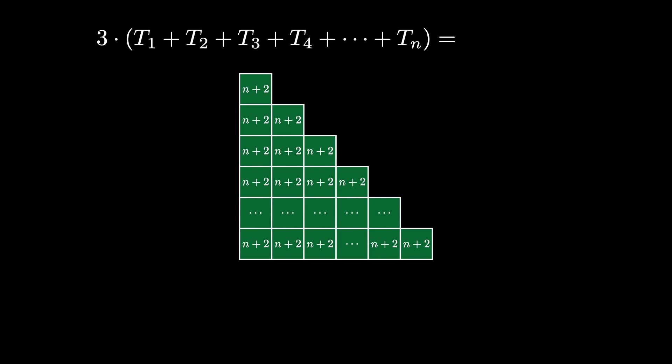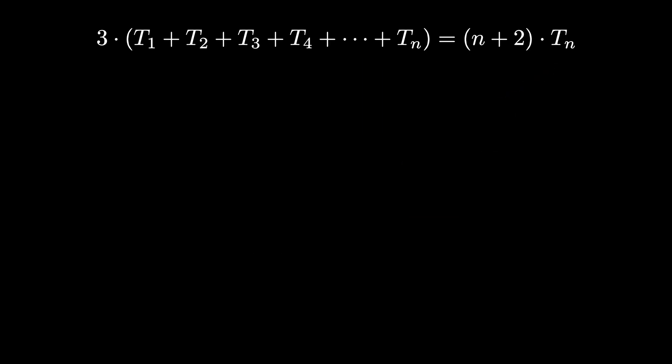And therefore, 3 times the sum of the first n triangular numbers must be equal to n plus 2 times the number of squares in the triangular array, which is t sub n, and that simplifies to n times n plus 1 over 2.